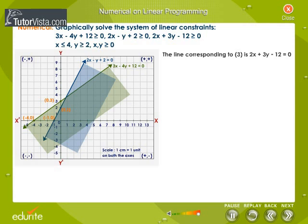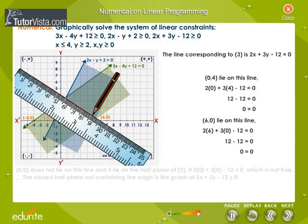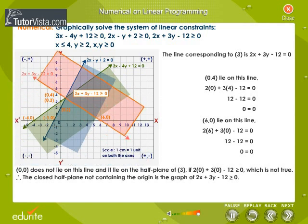The line corresponding to equation 3 is 2x plus 3y minus 12 equal to 0. The points (0, 4) and (6, 0) lie on this line. (0, 0) does not lie on this line, and it lies on the half plane of equation 3. The closed half plane not containing the origin is the graph of equation 3, shown by the pink shaded region.